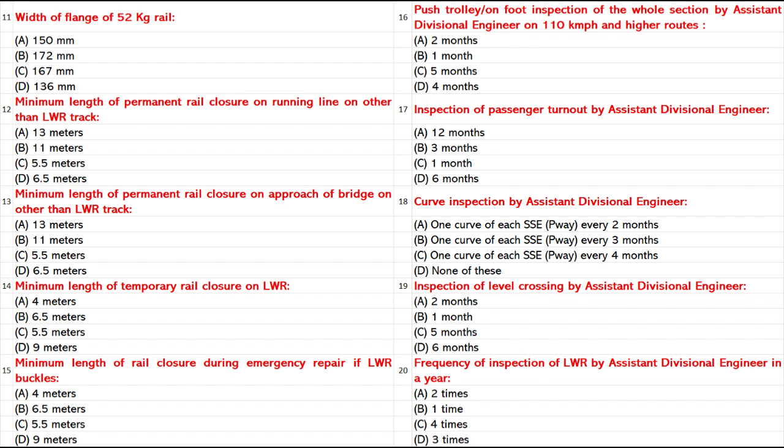Inspection of Passenger Turnout by Assistant Divisional Engineer: A. 12 months. B. 3 months. C. 1 month. D. 6 months. Answer: A. 12 months.